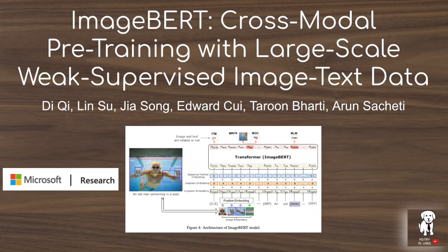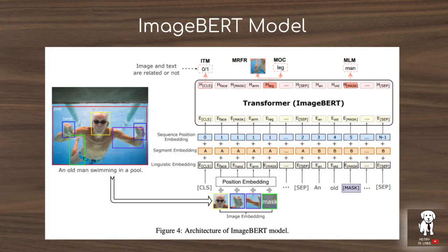This video will explore the new ImageBERT model from Microsoft Research. ImageBERT extends the transformer architecture to include visual tokens as well, pre-training the model with BERT's bi-directional masked language modeling on the text sequence and outputs related to the visual tokens.